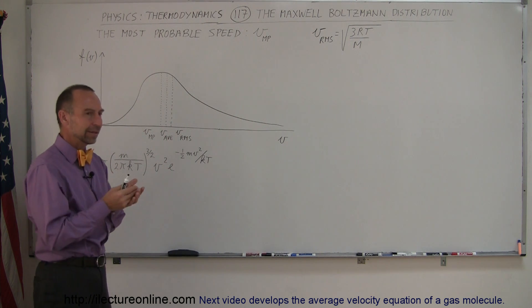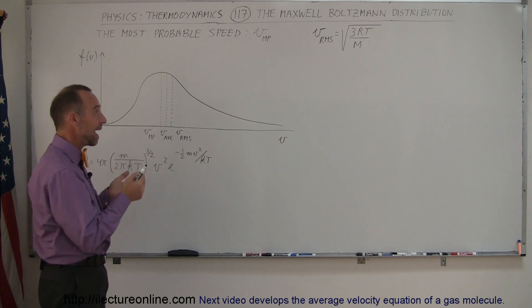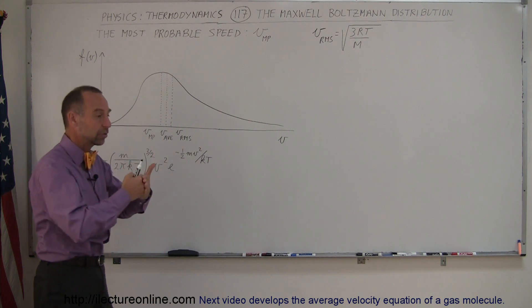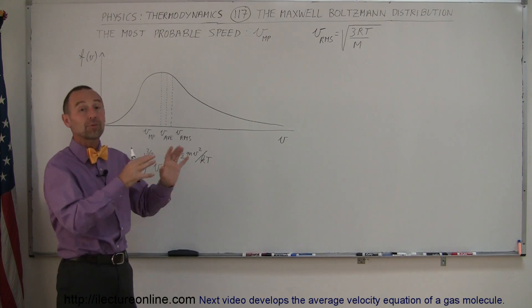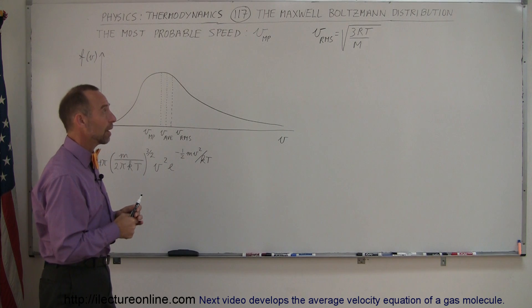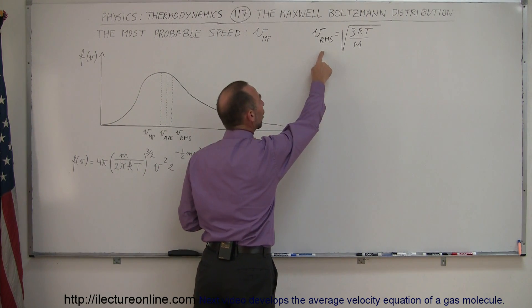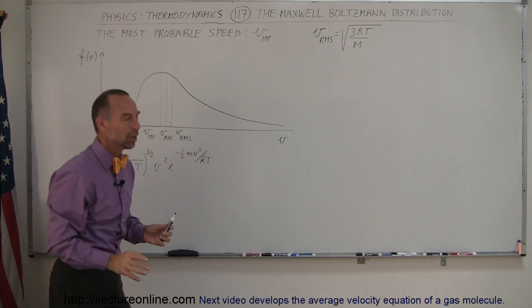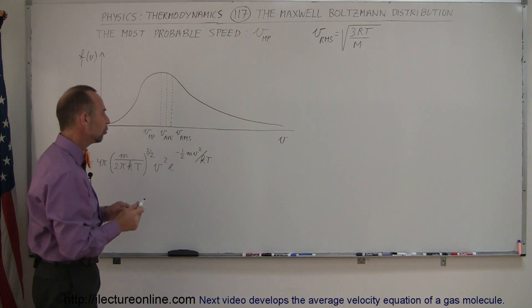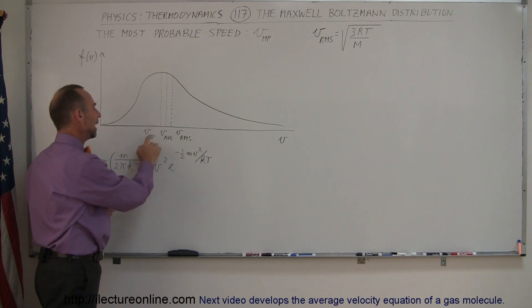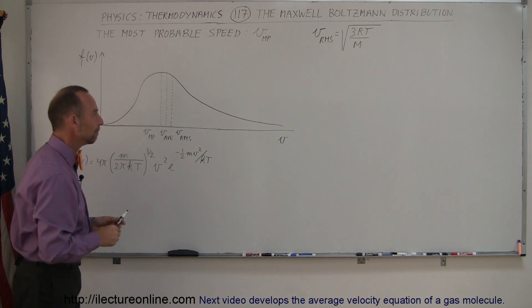The effect that the molecules in a gas have on like say the walls of the box, like in the amount of pressure they put on the walls of the box, that can be calculated when you assume that all the molecules have the RMS or root mean square velocity. So that's the important one. But there's two other important velocities. One is the average velocity and the other one is the most probable velocity.